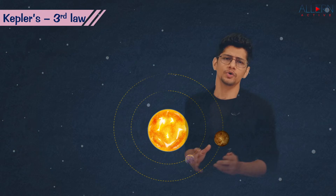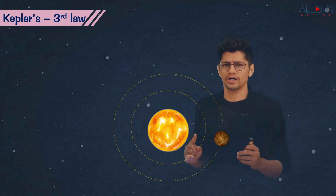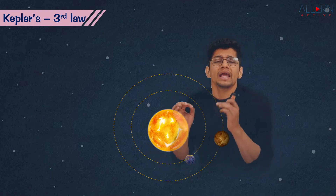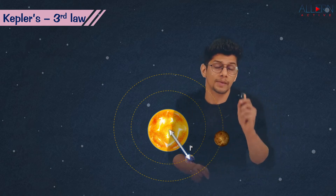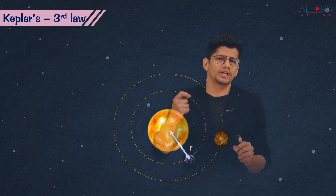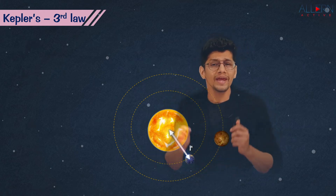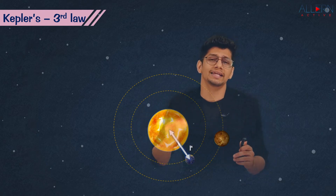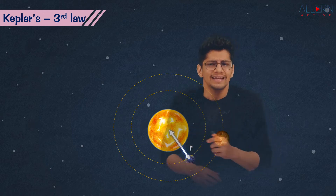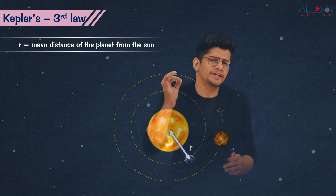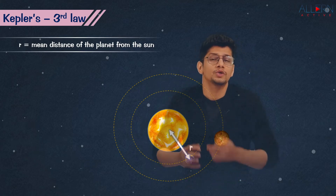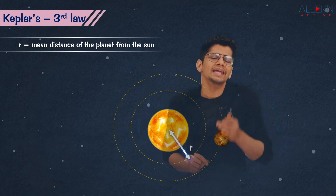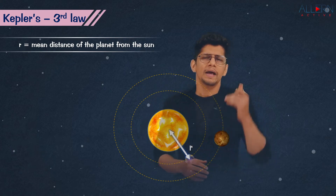Moving on to the third law. This time we look at the Sun from the top — a top view — with two planets, say Mercury and Venus. Mercury has a certain distance from the center of the Sun; we call this small r, the mean distance of the planet from the Sun. Remember this: r is the mean distance of the planet from the Sun.